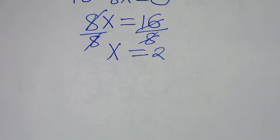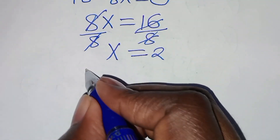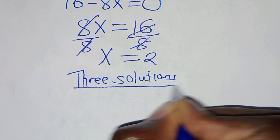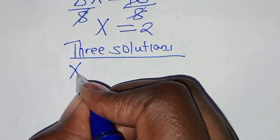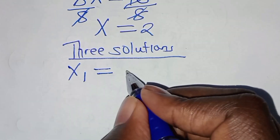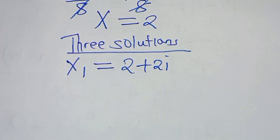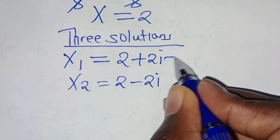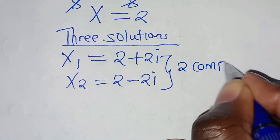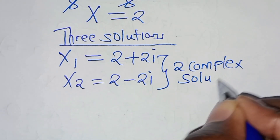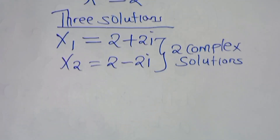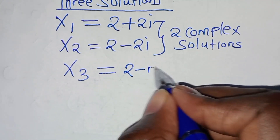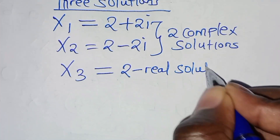So we have 3 solutions to this algebraic problem. We have x1 equal to 2 plus 2i, x2 equal to 2 minus 2i — these are 2 complex solutions — and x3 is equal to 2. This is the only real solution.